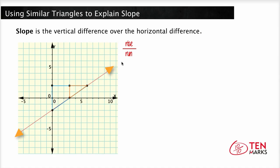So slope, which is rise over run, can also be seen as the height over the base. You can use right triangles to find the slope of the line.